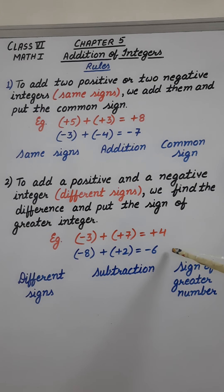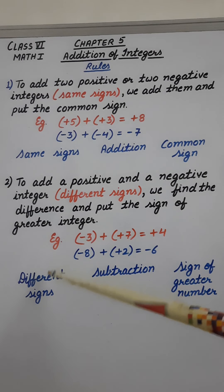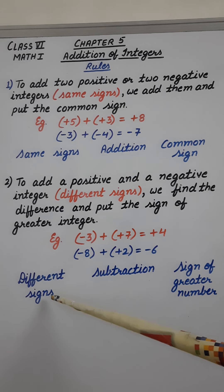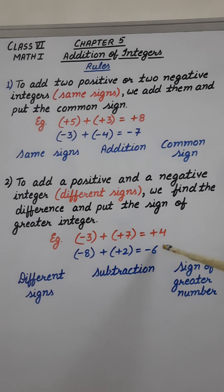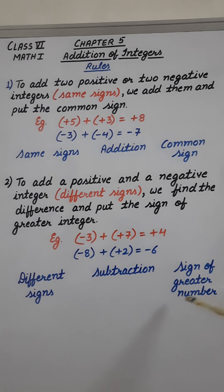So here we can see: if the signs are different, we have to do subtraction. And which sign will come? The sign of the greater number.